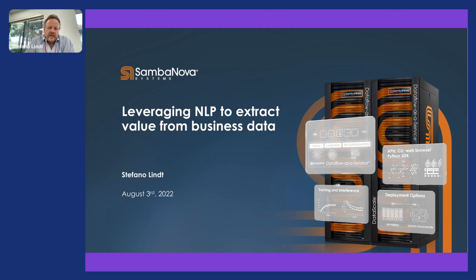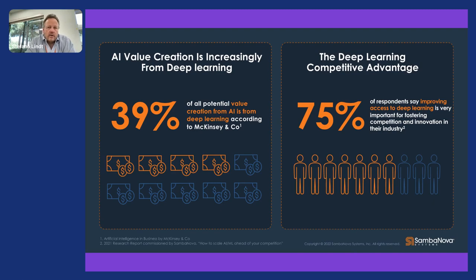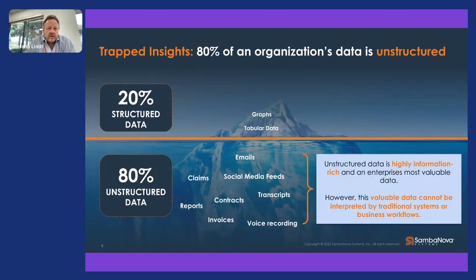We are all familiar with the notion that deep learning, language models, and computer vision are technologies that will be widely used in business going forward. Some people think that machine learning and deep learning are more important than the web was and will have a bigger impact on transformation. The challenge with deep learning is that a lot of our data is actually unstructured. Structured data lends itself very well for machine learning, but deep learning is really about extracting insight and information from unstructured data.